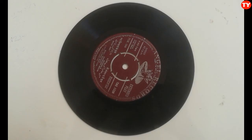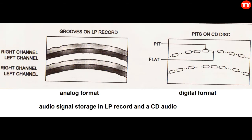On a CD, the audio is stored as 0s and 1s — in other words, pits and flats. LP records contain small grooves on which audio signal information is stored in analog format.